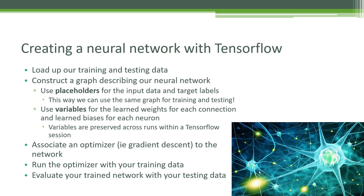After we're done, we can use a different set of data and feed it into those same input placeholders to test the results of our trained neural network on data it's never seen before. We will use variables like we saw before to keep track of the learned weights for each connection. As we iterate through different training steps, we use variables to maintain memory between runs of what those weights were between each connection and each artificial neuron, and tweak those using gradient descent as we iterate through more and more training steps. After that, we need to associate some sort of optimizer to the network — TensorFlow makes that very easy, whether it's gradient descent or a variation like Adam.